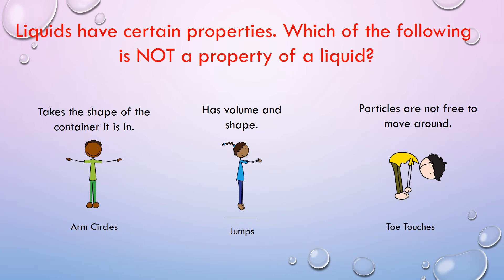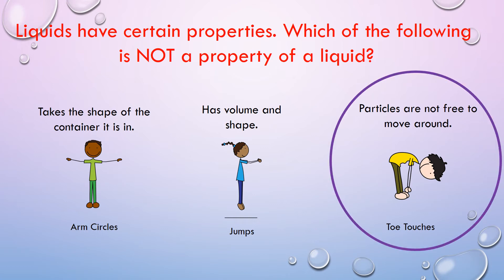Liquids have certain properties. Which of the following is not a property of a liquid? Takes the shape of the container it is in. Has volume and shape. Particles are not free to move around. Do the exercise that corresponds to the one that is not a property of a liquid. Particles are not free to move around is not a property of a liquid — liquids do move around.